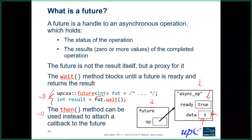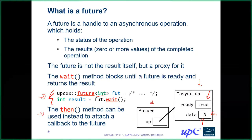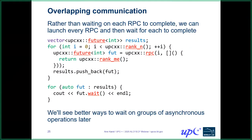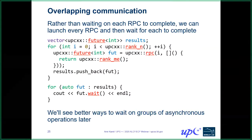A future corresponds to something more powerful than an MPI request, as we'll see with the then method. We can actually construct entire dependency graphs using futures. Typically we wouldn't want to just initiate something and then wait on it immediately because we'd lose all the benefits of asynchrony. Instead, we'd want to overlap multiple communications or communication with computation by doing something between the initiation and the wait.